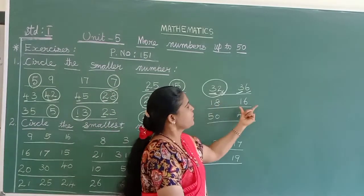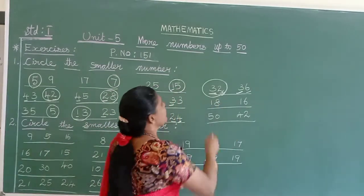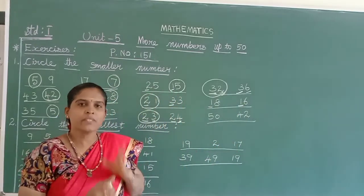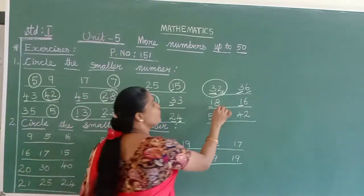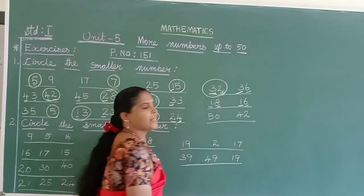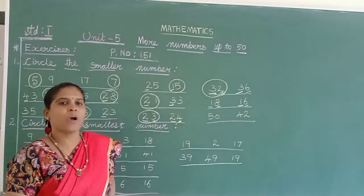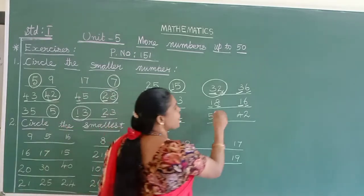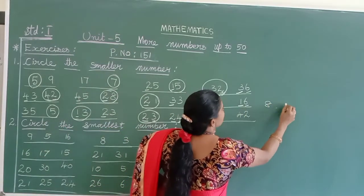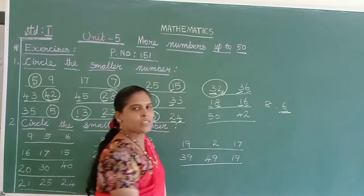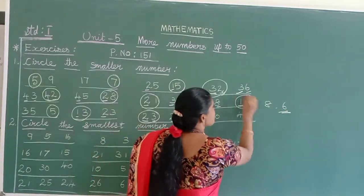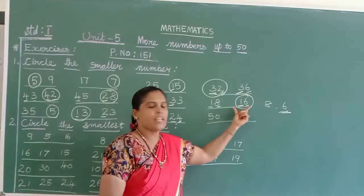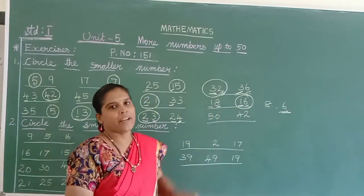Next: 18 and 16. In the tens place both numbers are the same, 1. So we should move on to the ones column: 8 and 6. 6 is smaller than 8. So here you should circle 16. You can read: 16 is smaller than 18.